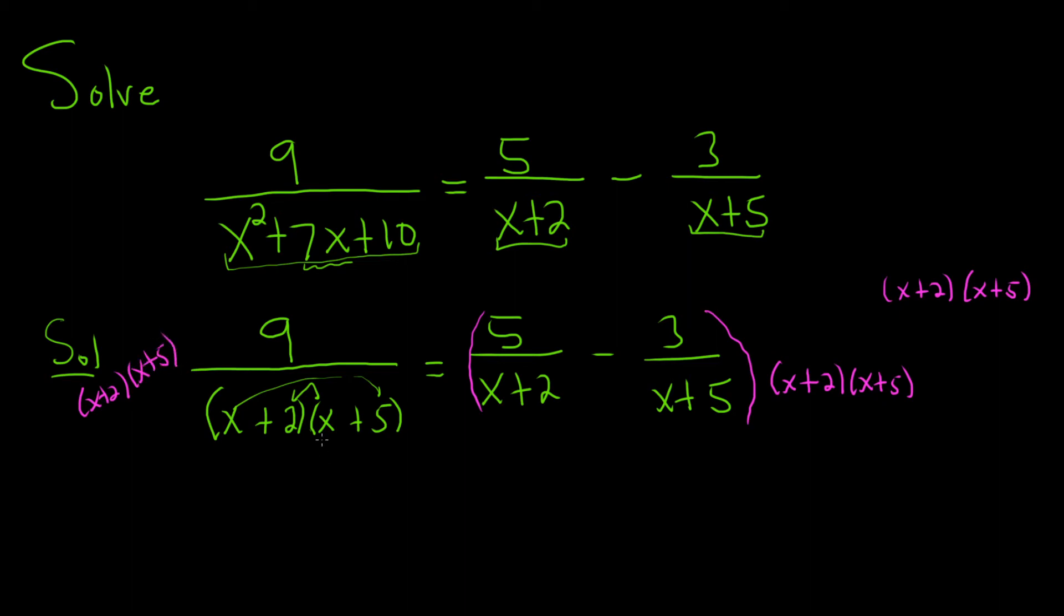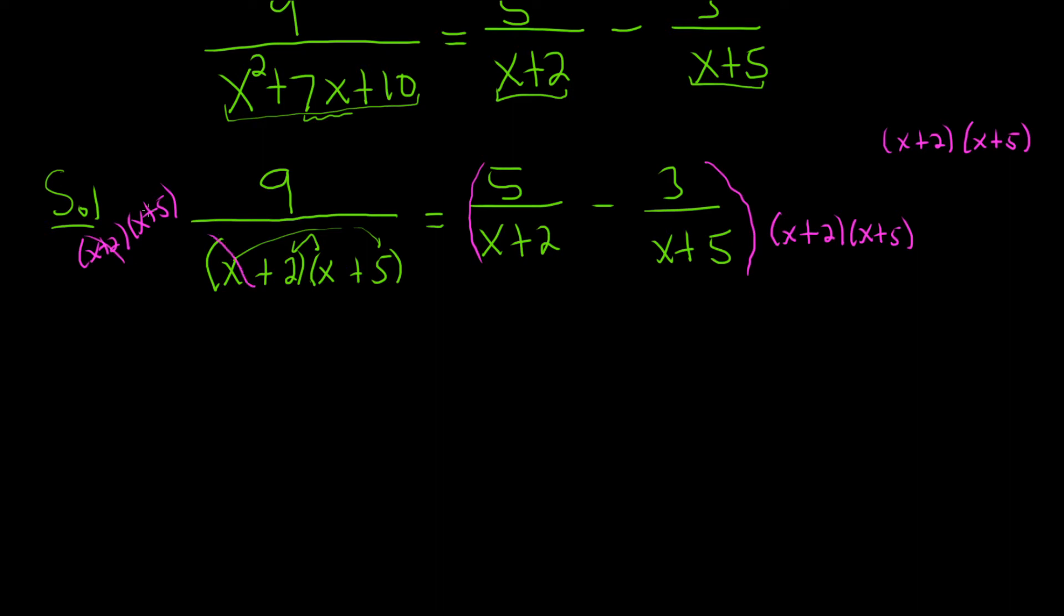All right, so on the left-hand side, the x plus 2's cancel, the x plus 5's cancel. So we're left with 9 equals.